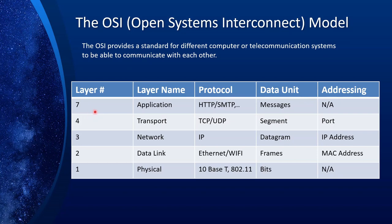Each layer has a layer number, a layer name, a protocol, a data unit, and addressing — which may or may not have some addressing scheme. Starting from layer one at the bottom: layer one is called the physical layer, and it literally is the medium through which packets travel. It could be wired, such as cables — the standard for that is 10BASE-T — or it could be Wi-Fi wireless, and the standard for that is 802.11. The data unit is bits and there is no addressing scheme.